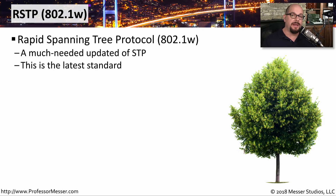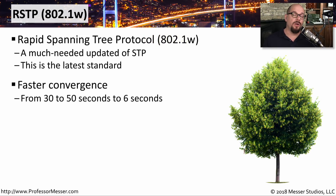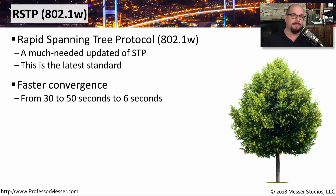One of the newer standards of Spanning Tree Protocol is Rapid Spanning Tree Protocol, or RSTP, also referred to as 802.1w. Rapid Spanning Tree Protocol was created because the convergence process with the original Spanning Tree Protocol could take anywhere from 30 to 50 seconds. On modern networks, 30 to 50 seconds is a very long time. With Rapid Spanning Tree Protocol, that convergence process takes only six seconds to bring the network back up and running.